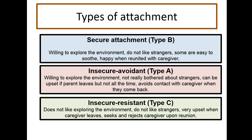Insecure avoidant parents tend to ignore their child a lot. And insecure resistant parents tend to be quite sometimes-ish with their child — for example, on Fridays wanting to stay at home with the child, but on Saturday wanting to go out with friends. So the parent's behaviour is not secure; it's very ambivalent, changing all the time: 'I love you sometimes, sometimes you're just getting in the way.'